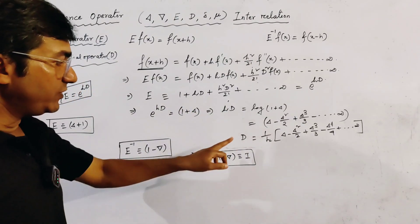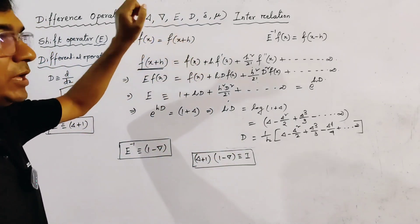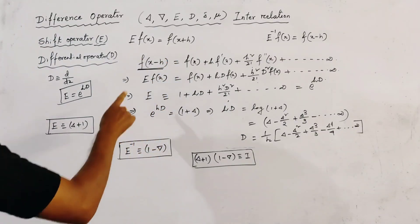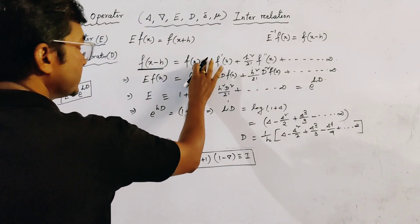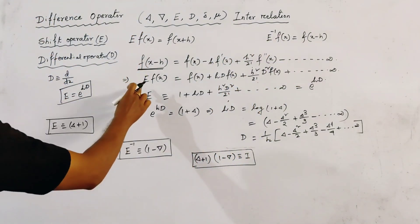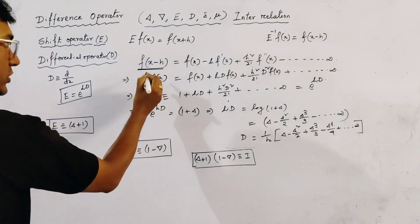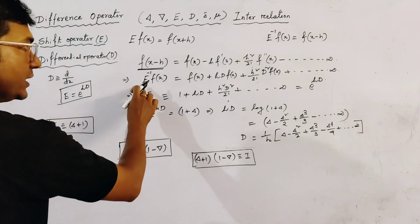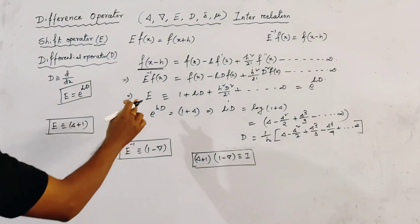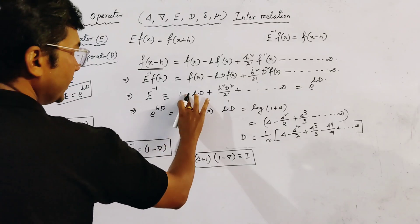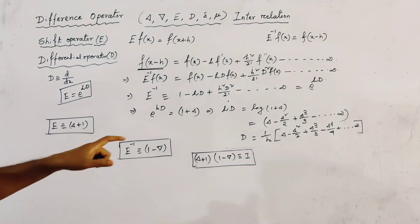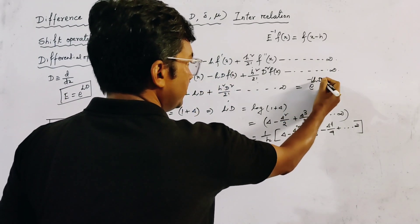To find the relation between differential operator D and the backward difference operator nabla, we consider f(x - h) in place of f(x + h). This expansion has alternating minus and plus signs. Putting in the definition of E inverse, we get E inverse equivalent to 1 - hD + h²D²/2! - h³D³/3! + ... and so on, which is e^(-hD) in place of e^(hD).